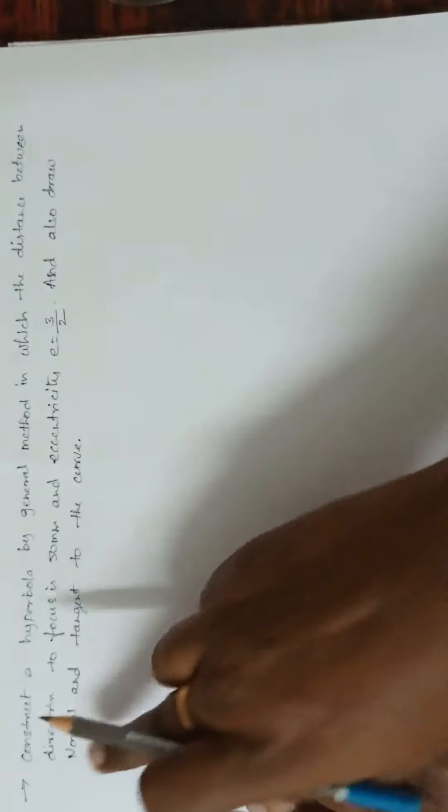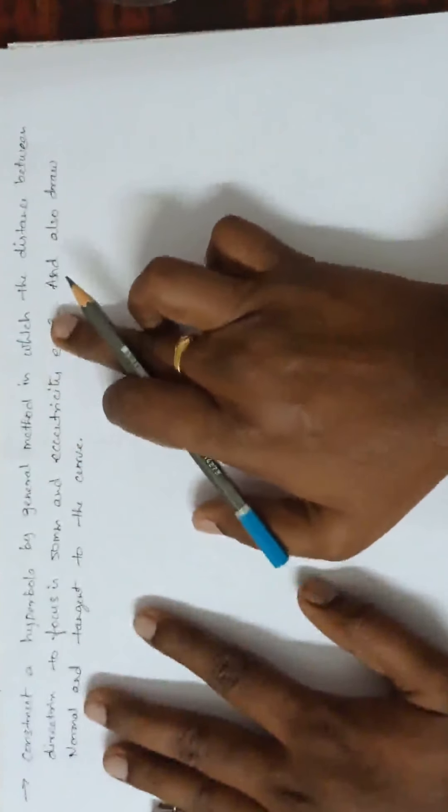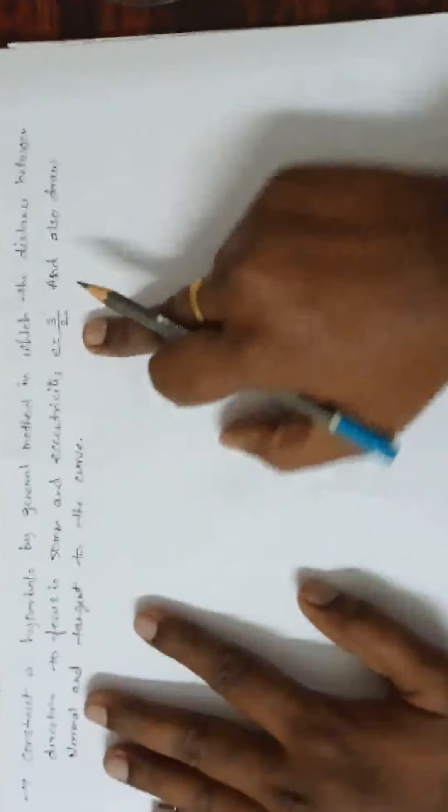Let us read the question. Construct a hyperbola by general method in which the distance between directrix to focus is 50 mm and eccentricity is 3 by 2.